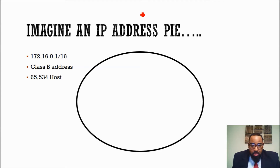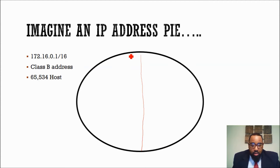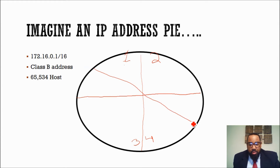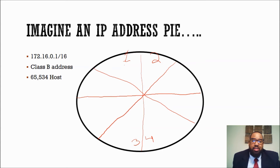Now, with subnetting, what we could essentially do is take this pie, divide it in half, and now we have two subnets — subnet 1 and subnet 2. And then we can take that same pie and divide it again, giving us subnet 3 and subnet 4. And we can continue to divide that pie until we're left with basically one piece of the pie for everybody.